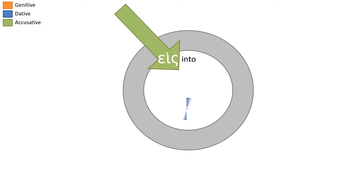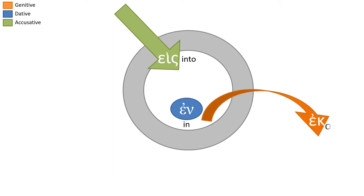Eis, meaning 'into,' en, meaning 'in,' and ek, meaning 'out of.' Now notice we already have all three colors — all three cases. Let's examine this.